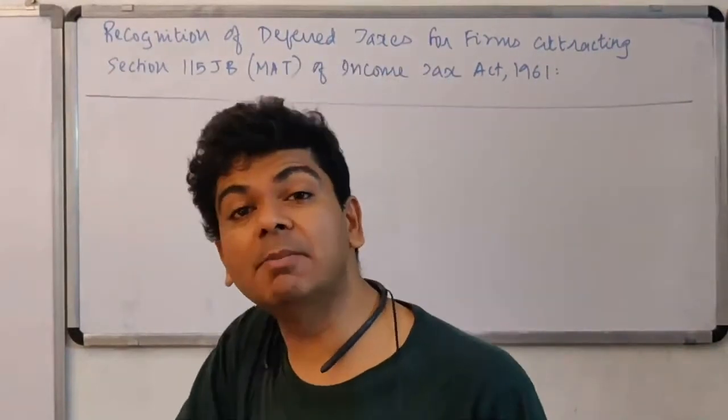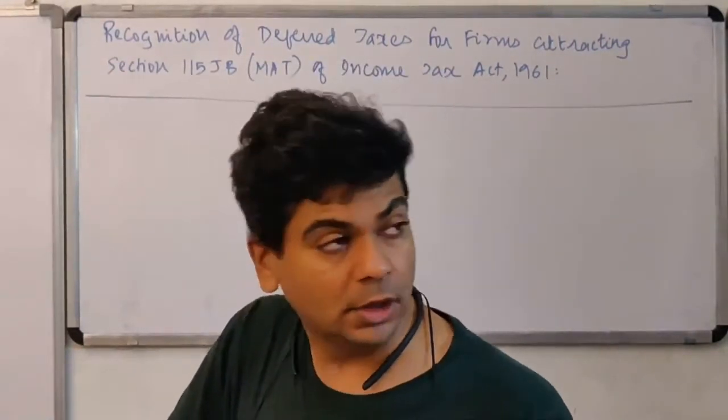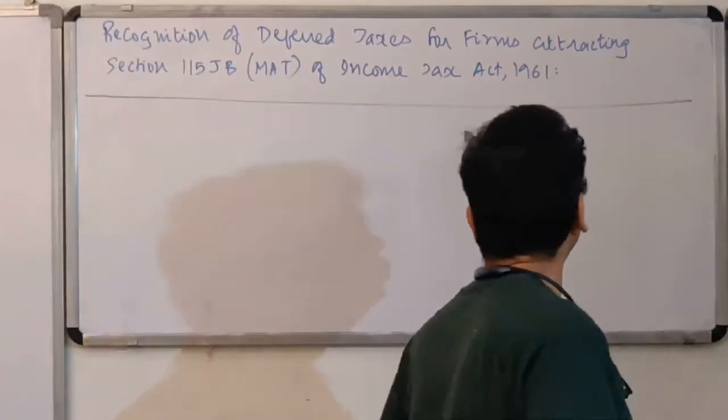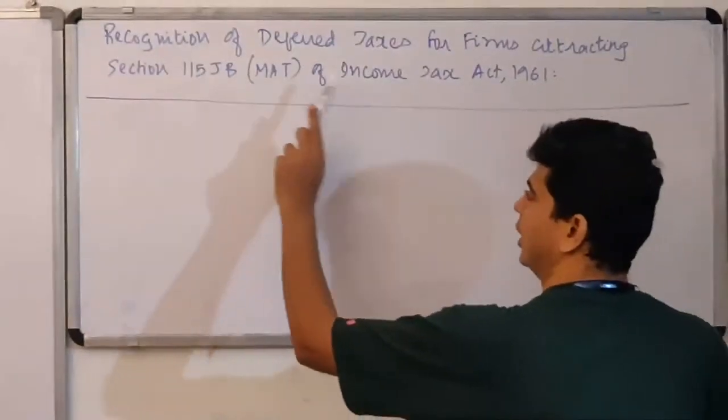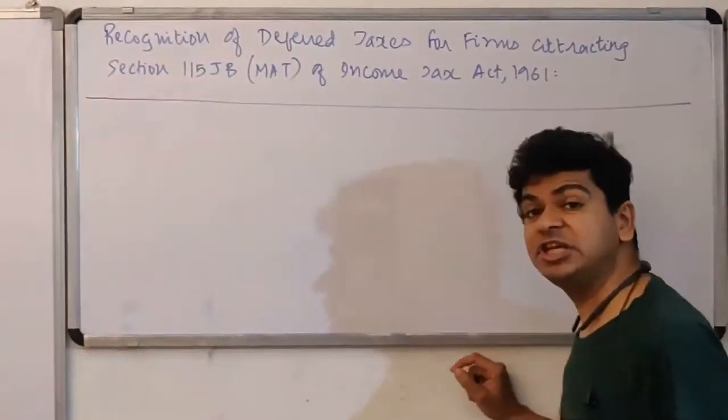By MAT we mean the Minimum Alternate Tax. This provision is introduced in the Income Tax Act 1961 as per Section 115JB.